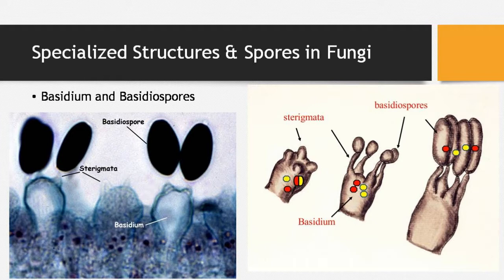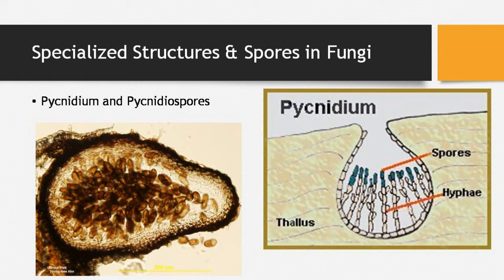The basidium and basidiospores are the characteristic feature of Basidiomycetes. In Basidiomycetes, spores are always exogenously produced — basidiospores are attached on the outside — whereas in Ascomycetes the ascospores are endogenous. Several fungi have basidiospores as examples. The pycnidium — a deeply seated flask-shaped structure within the thallus — has hyphae attached inside and is visible in the diagram.